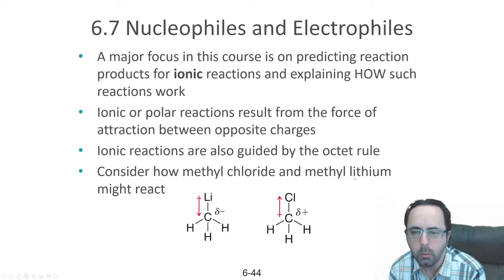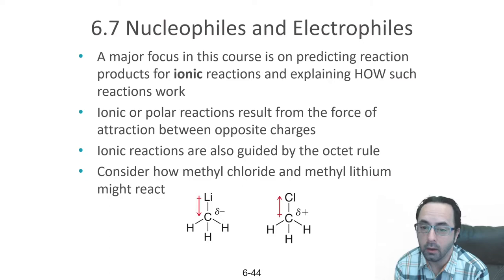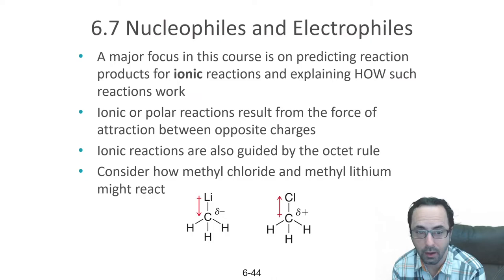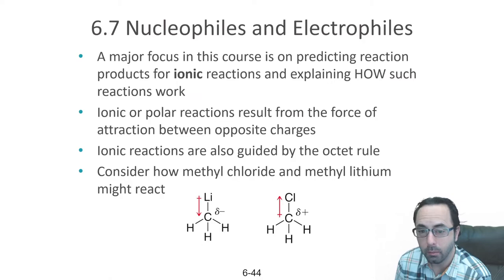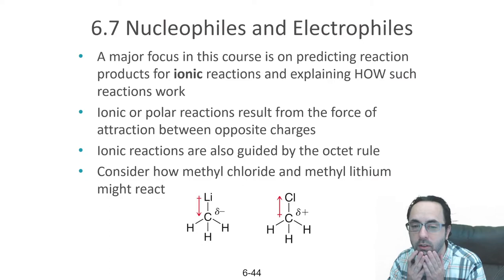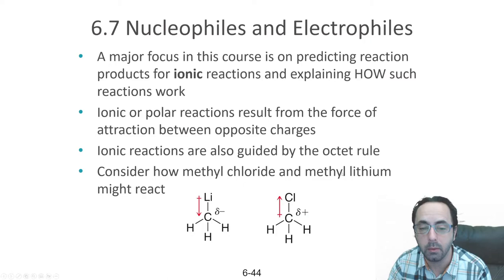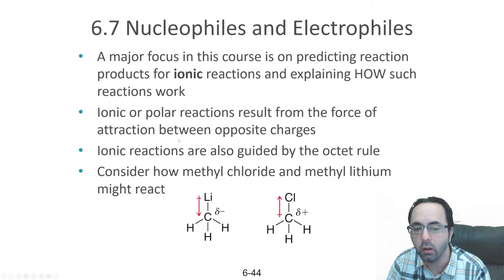Moving forward, we're going to start talking about the individual steps that occur, analyzing them based on their kinetics and thermodynamics — activation energies and delta G. We're going to start by talking about ionic reactions, as opposed to radical reactions. Radicals are produced when you have homolytic bond cleavage, meaning each atom gets one electron. Most of the reactions we talk about are going to be ionic reactions, where a bond breaks and one atom gets both electrons.